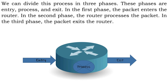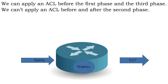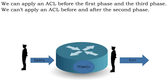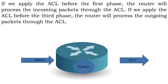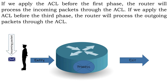In the first phase, the packet enters the router. In the second phase, the router processes the packet. In the third phase, the packet exits the router. We can apply an ACL before the first phase and before the third phase. We cannot apply an ACL before or after the second phase. If we apply the ACL before the first phase, the router will process the incoming packets through the ACL. If we apply the ACL before the third phase, the router will process the outgoing packets through the ACL.